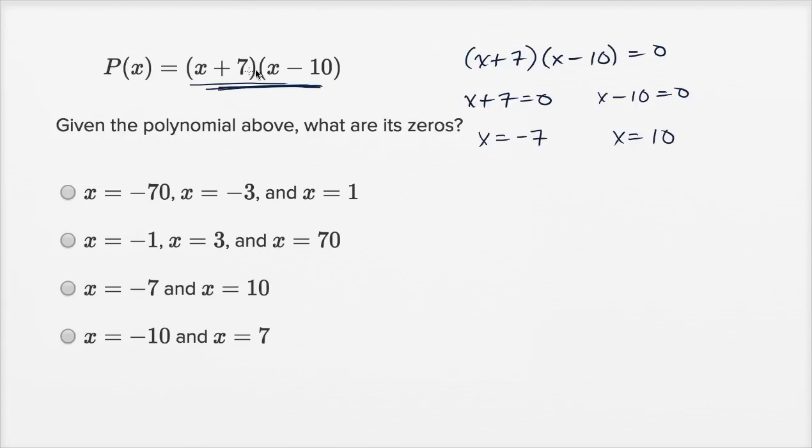Either of these is going to make this expression equal to zero. You could see that. If x is equal to negative seven, this is going to be zero. Zero times anything here, the whole thing is going to be zero. If x is equal to 10, this expression is going to be zero. And then the whole thing is going to be zero.